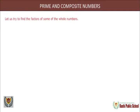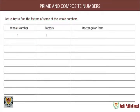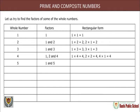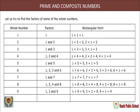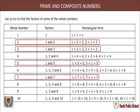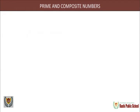Prime and composite numbers: let us find the factors of some whole numbers. Factor of 1 is 1; factors of 2 are 1 and 2; factors of 3 are 1 and 3; factors of 4 are 1, 2 and 4; factors of 5 are 1 and 5; factors of 6 are 1, 2, 3 and 6; factors of 7 are 1 and 7; factors of 8 are 1, 2, 4 and 8. We observe that 2, 3, 5 and 7 have only two factors: the number itself and one.